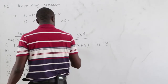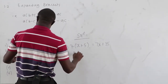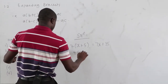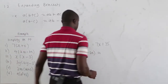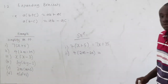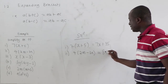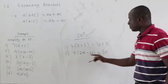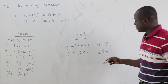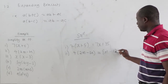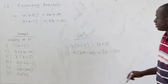Second: 4 times 2m minus 3n. Applying the distributive property: 4 times 2m equals 8m. And 4 times negative 3n equals negative 12n. So the answer is 8m minus 12n.